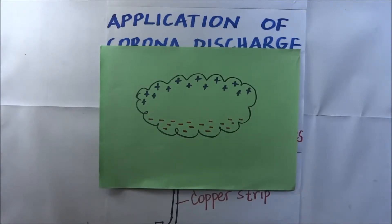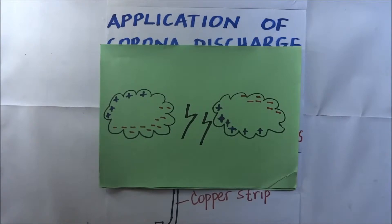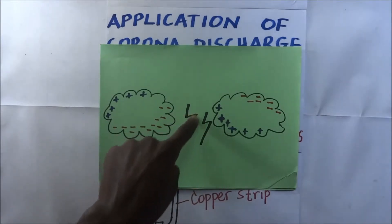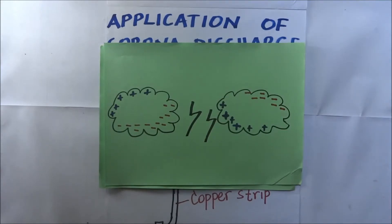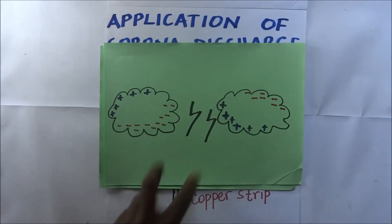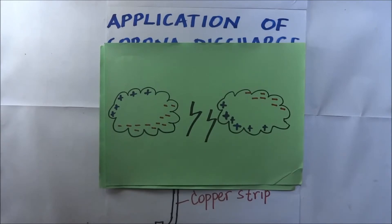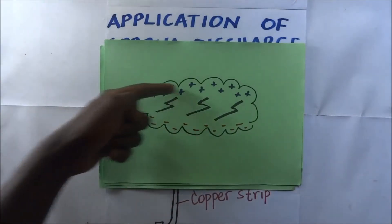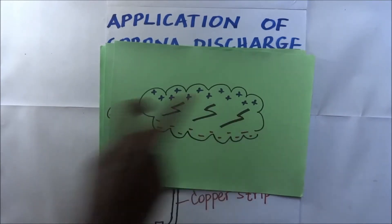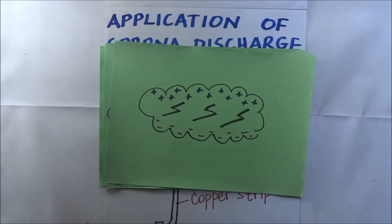Lightning occurs when an electrostatic discharge occurs between two electrically charged regions of the cloud, between charged clouds, or between a cloud and the ground. When two oppositely charged clouds get near each other, a huge spark of electrons jumps from the negatively charged cloud to the positively charged cloud. It can happen between two clouds, within a cloud, or between the cloud and the ground.